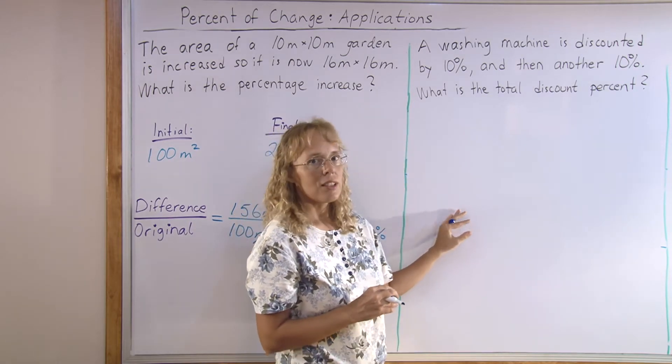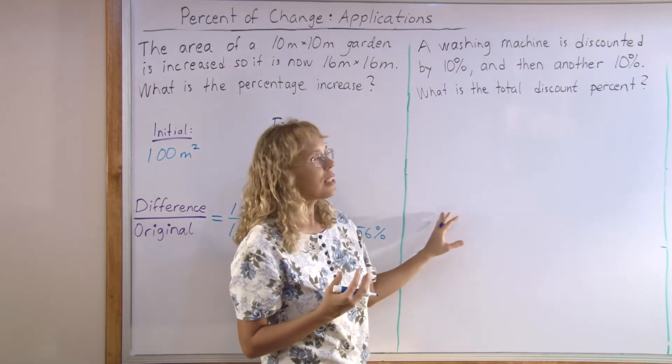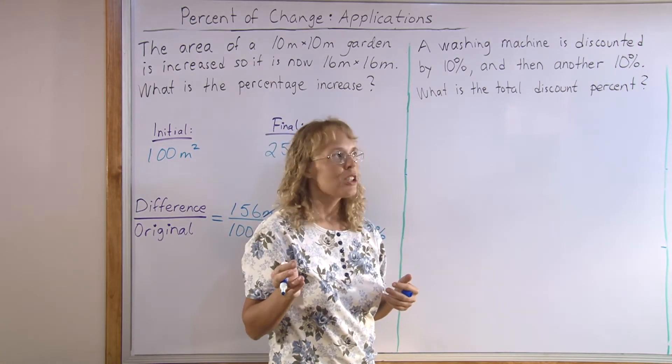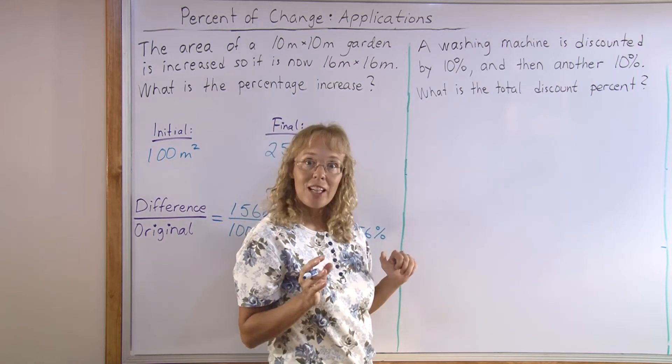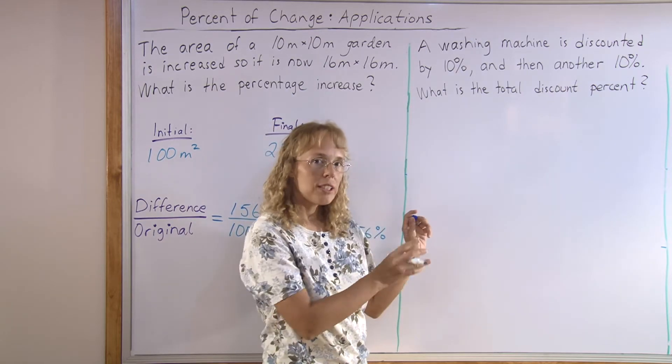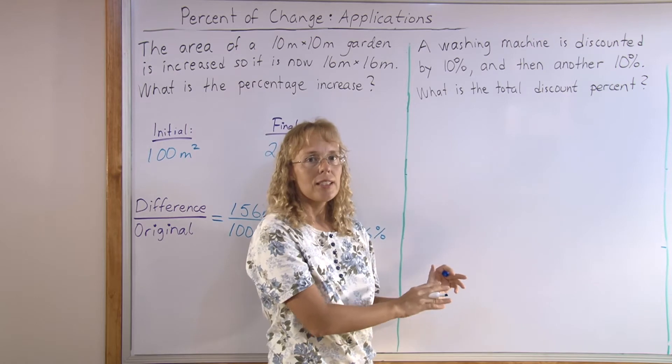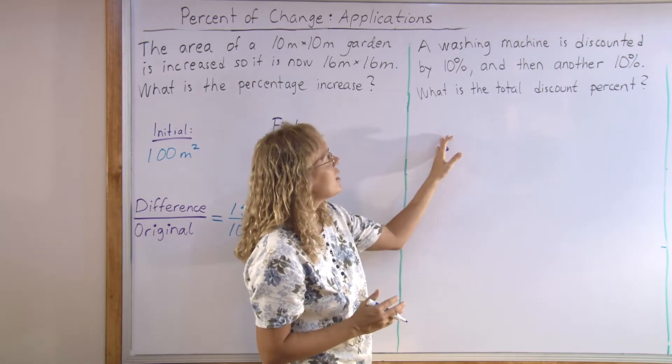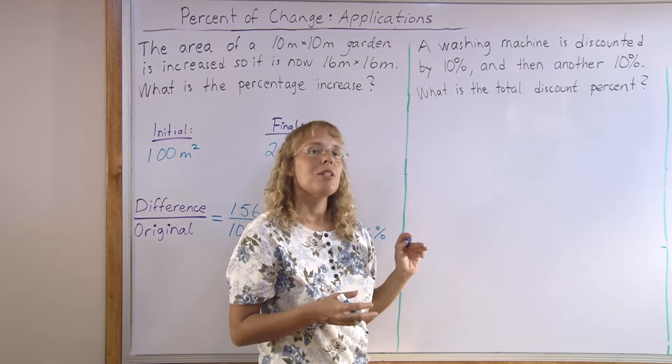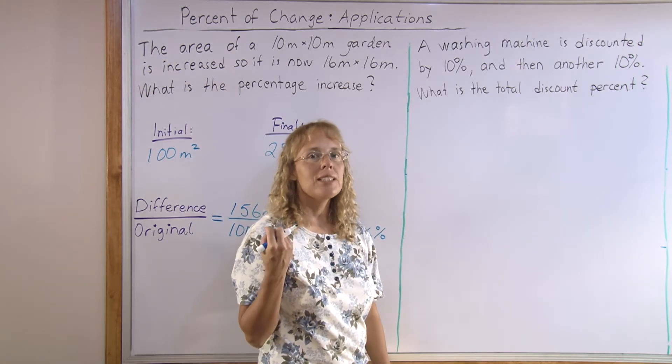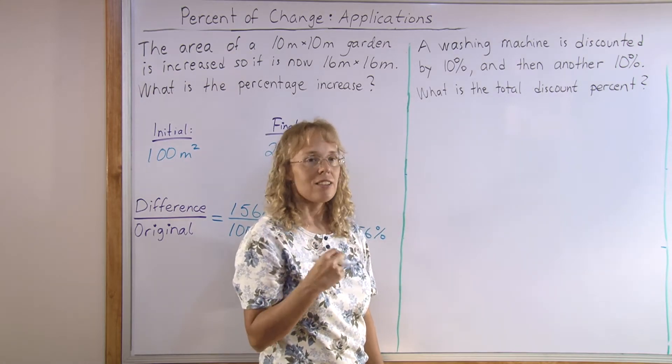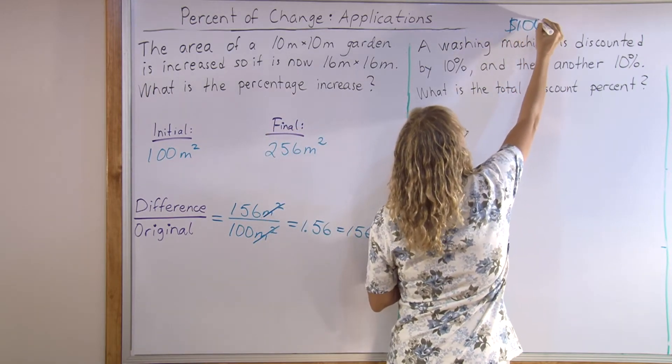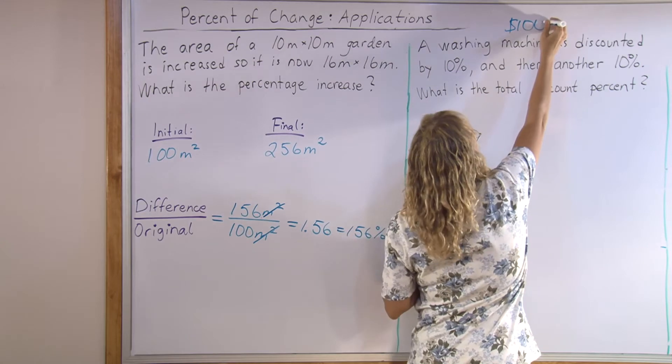It seems like there's a problem because it doesn't tell us the price of the washing machine. So, what do we do? I want to tell you a little trick. I know this can be solved without knowing the price. But if you don't know how and you just want to get going, just give it the price. And when it has to do with percent, it's always easiest to choose the number 100 as your price.